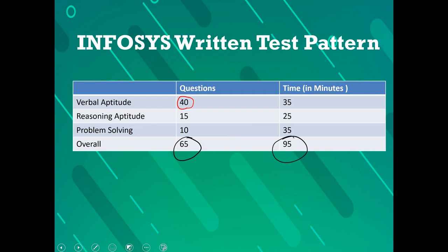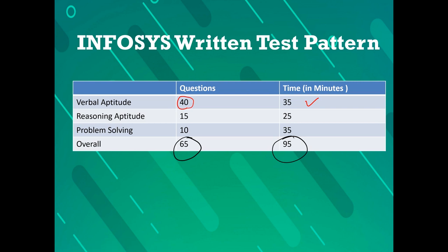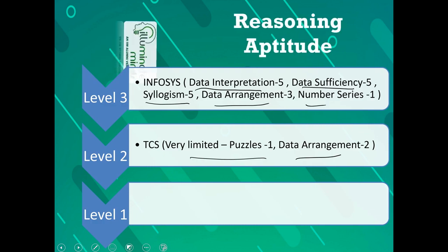For Infosys, the test pattern consists of verbal aptitude — 40 questions in 35 minutes; reasoning aptitude — 15 questions in 25 minutes; and problem solving — 10 questions in 35 minutes, which is almost the same as quantitative aptitude. It consists of three to four questions of data arrangement and seven questions of quantitative aptitude. Infosys calls it the problem solving section. Overall, 65 questions need to be done in 95 minutes.